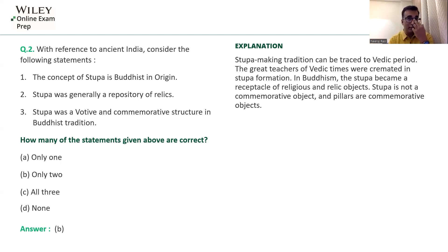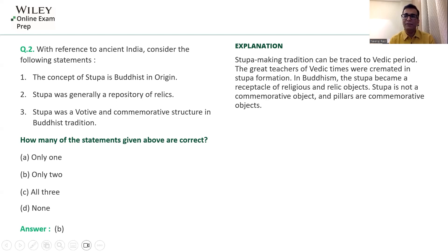The second question, with reference to ancient India, considers three statements about Stupa: (1) the concept of Stupa is Buddhist in origin; (2) Stupa was generally a repository of relics; (3) Stupa was a votive and commemorative structure in the Buddhist tradition. First, regarding the original tradition of making Stupas — it can be traced to the Vedic period and is not at all related to Buddhism.